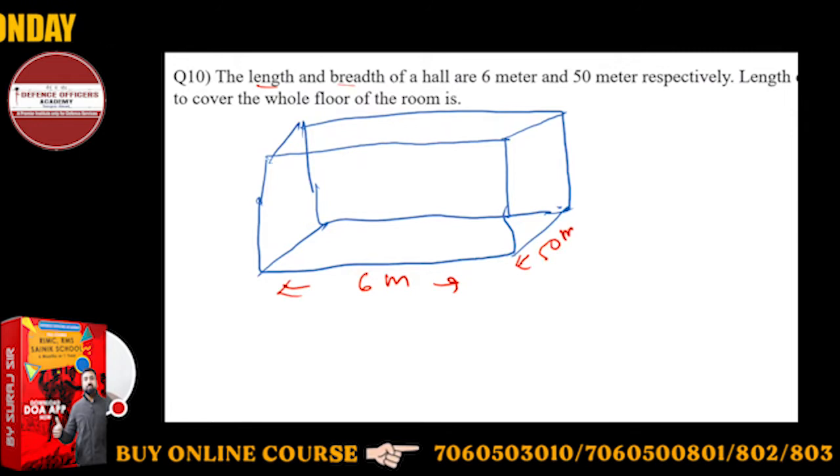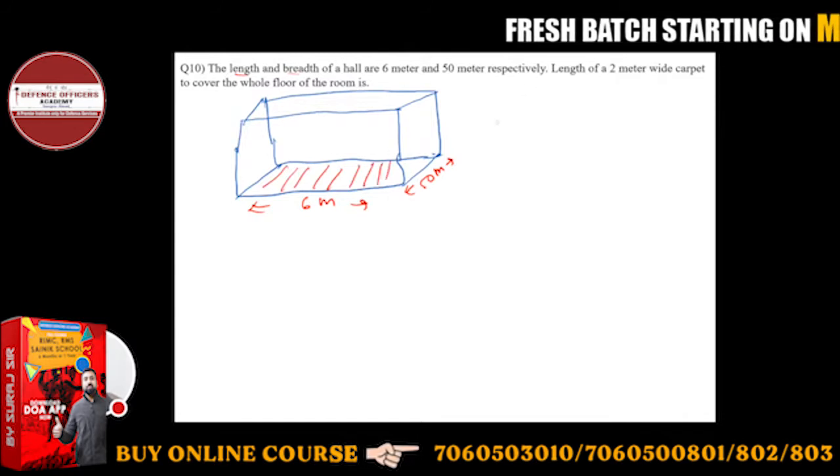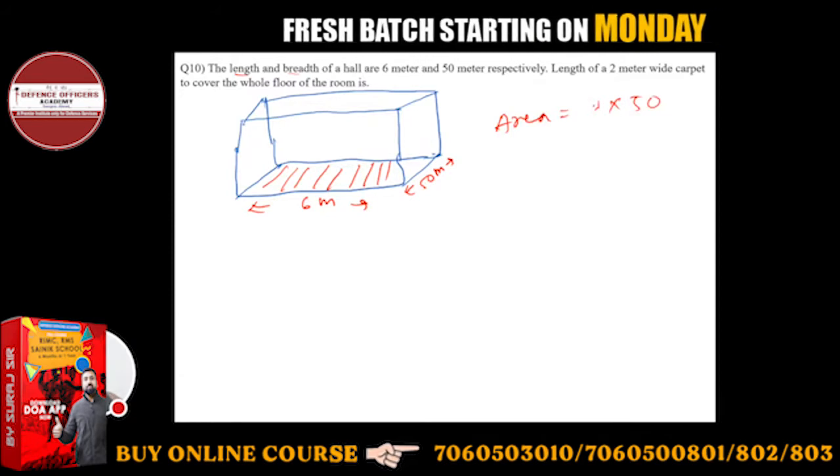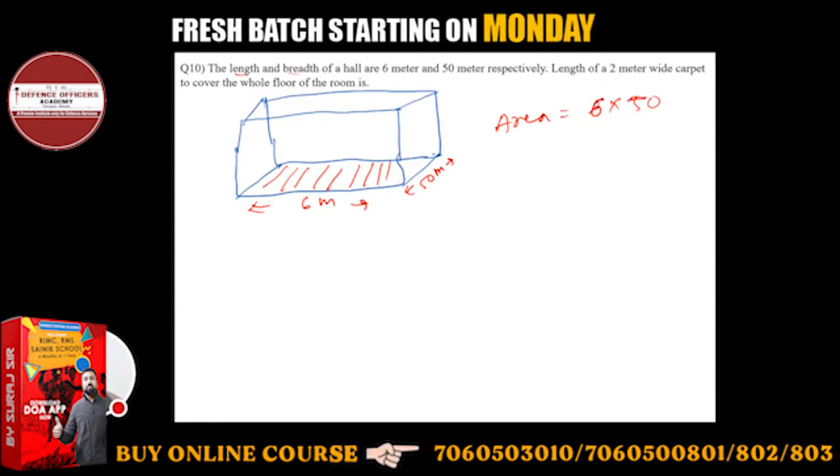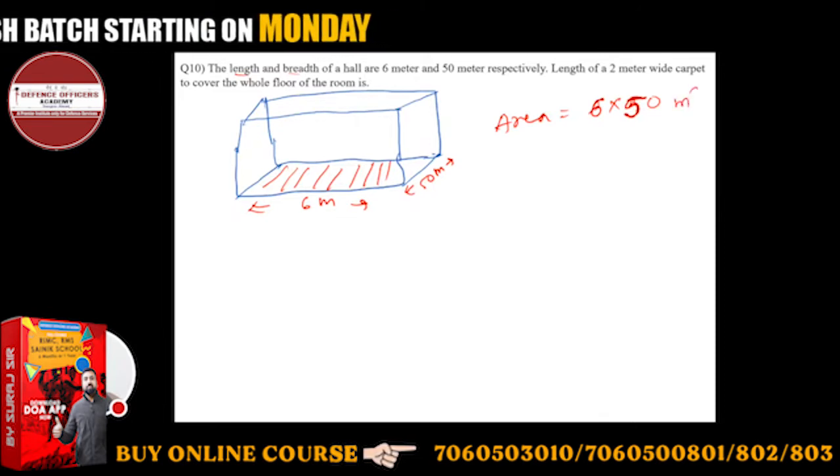So this is 50 meter, very long, but it doesn't look it. You have to cover the whole floor of this room. This area will be 6 into 50, length into breadth is 6 into 50 directly. Base area, floor area, 6 into 50 meter square.